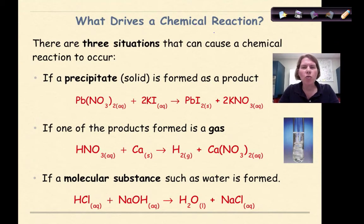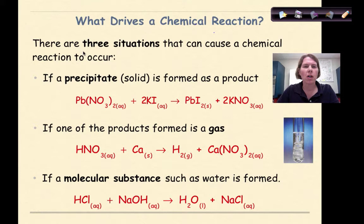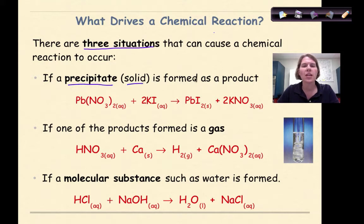So what drives a chemical reaction? What makes a chemical reaction actually take place? You need to be aware that there are three different types of situations that can cause a chemical reaction to occur. The first is if a precipitate, otherwise known as a solid, is formed as a product.